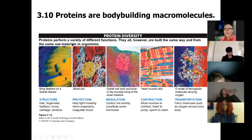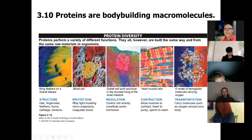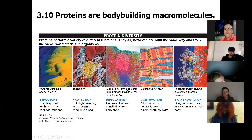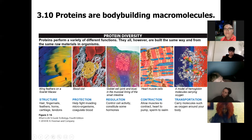Proteins are a very large and diverse group. Structural proteins include hair, fingernails, feathers, horns, cartilage, tendons, muscles, and bones. For protection, proteins form blood clots and antibodies in the immune system that protect from infection. Proteins also regulate cell communication as chemical messengers. For movement, proteins in heart and skeletal muscles enable contraction. For transportation, hemoglobin is the protein that carries oxygen.